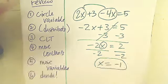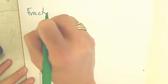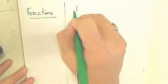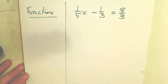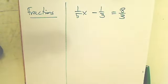Should be an easy lesson today. This is the same lesson. Try this one with fractions. 1 5th x minus 1 3rd equals 8 3rds. 1 5th x minus 1 3rd equals 8 3rds.